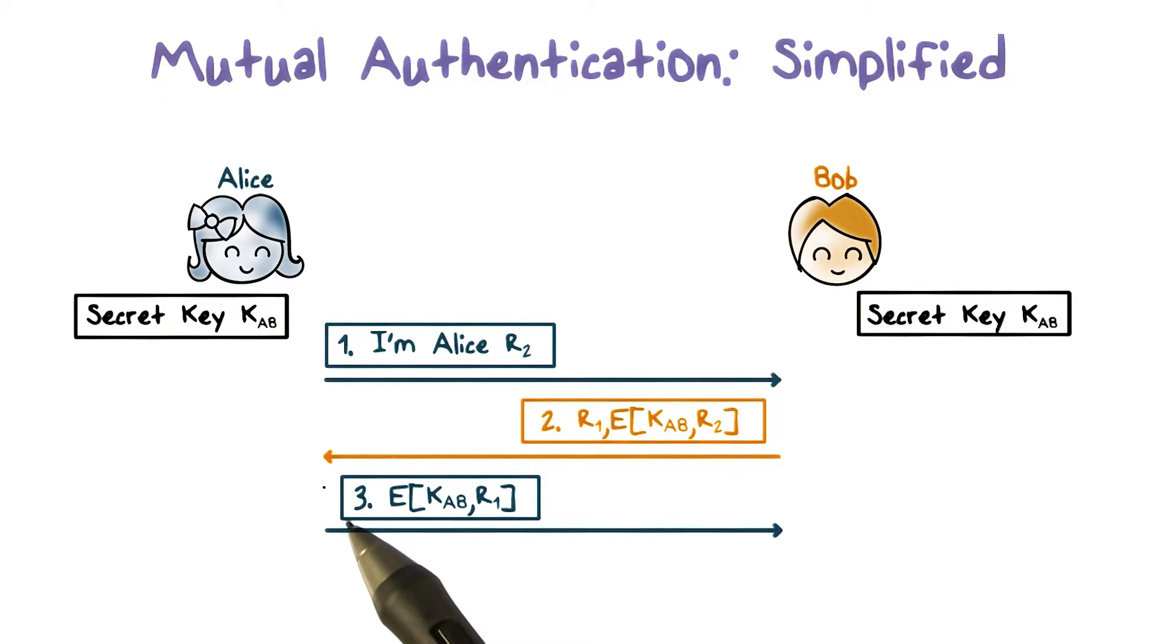Upon receiving this response, Alice decrypts the decipher text to see if it matches the plain text R2 that she has sent to Bob. If it matches, then she knows that she's communicating with Bob.